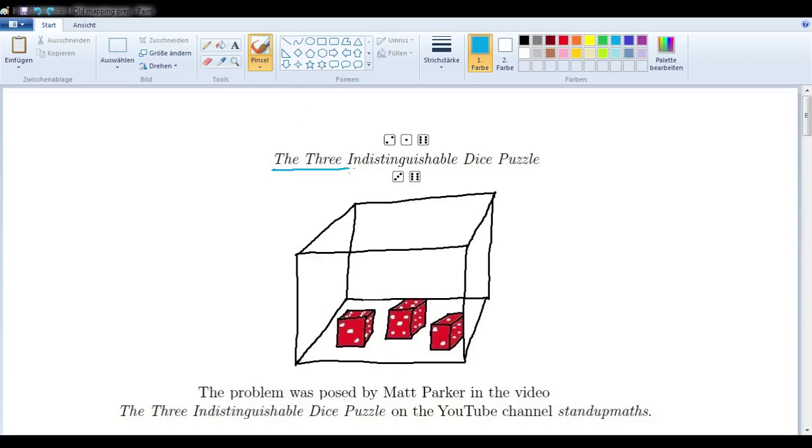In this video, we want to solve the three indistinguishable dice puzzle with a closed form expression, in other words, with a formula that will always give us the answer.